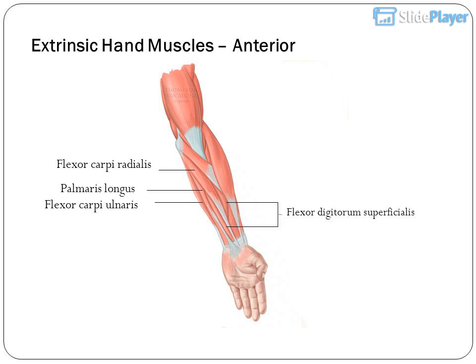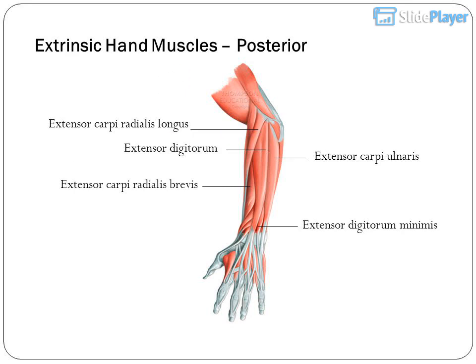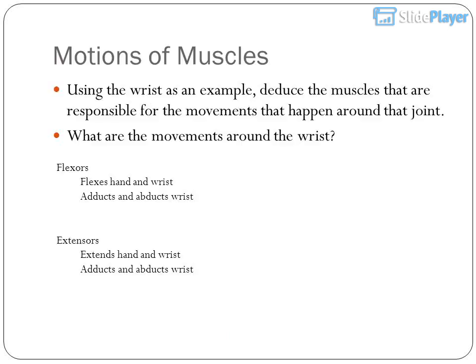Extrinsic hand muscles — anterior: flexor carpi radialis, palmaris longus, flexor carpi ulnaris, flexor digitorum superficialis. Posterior: extensor carpi radialis longus, extensor carpi digitorum, extensor carpi ulnaris, extensor carpi radialis brevis, extensor carpi radialis longus.